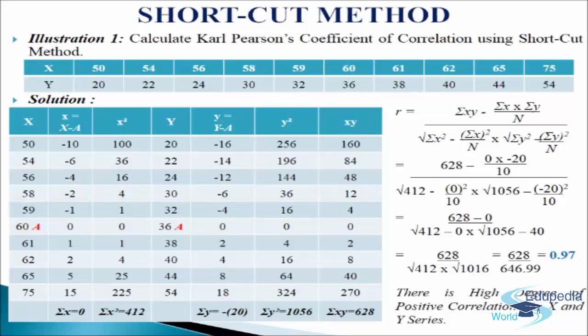In the second column we will write x, which equals x minus a, where a is the assumed mean. So 50 minus 60 comes minus 10, 54 minus 60 comes minus 6, 56 minus 60 comes minus 4, 58 minus 60 comes minus 2, 59 minus 60 comes minus 1, 60 minus 60 comes 0, 61 minus 60 comes 1, 62 minus 60 comes 2, 65 minus 60 comes 5, and 75 minus 60 comes 15.